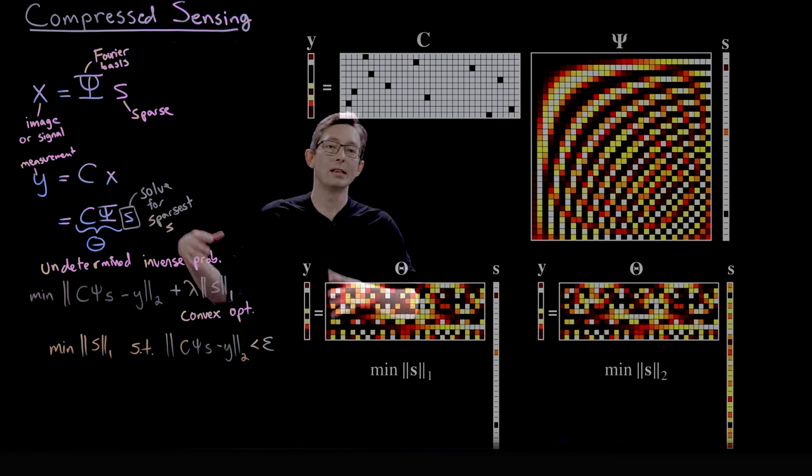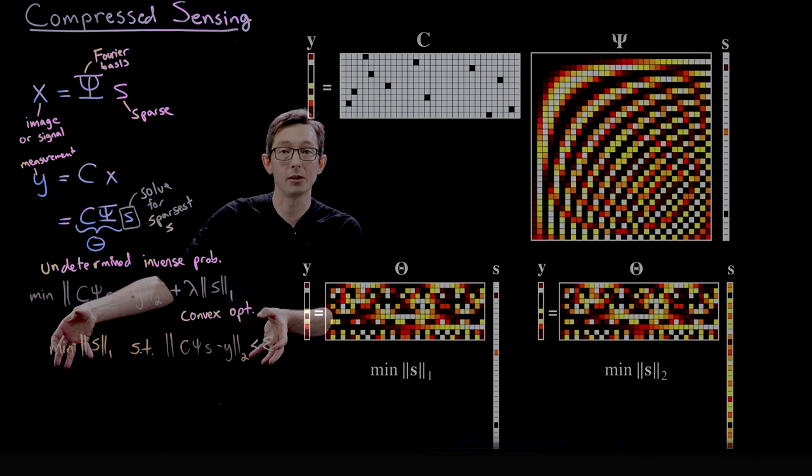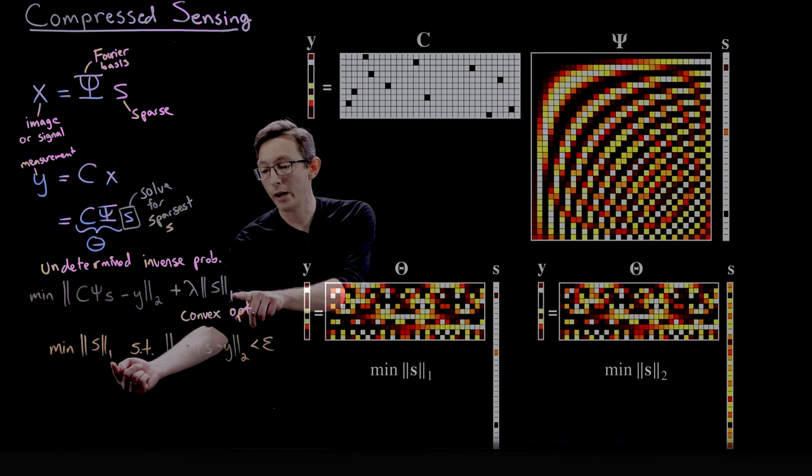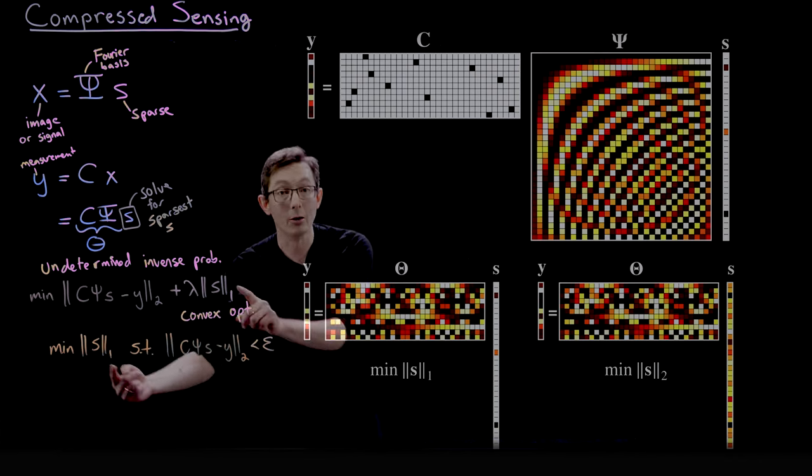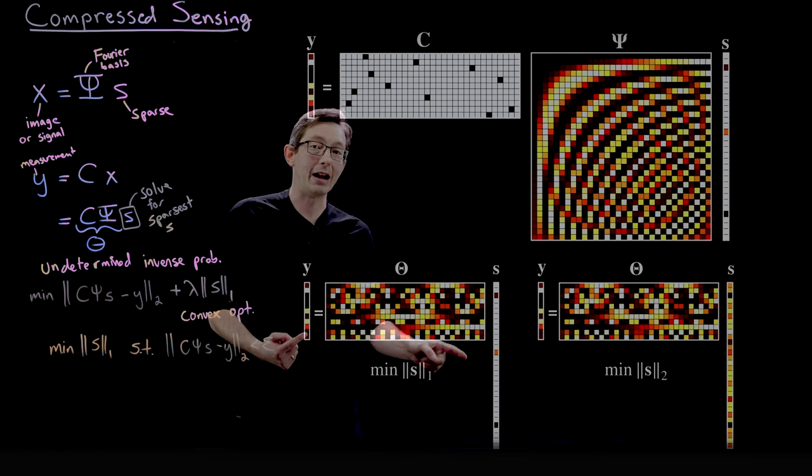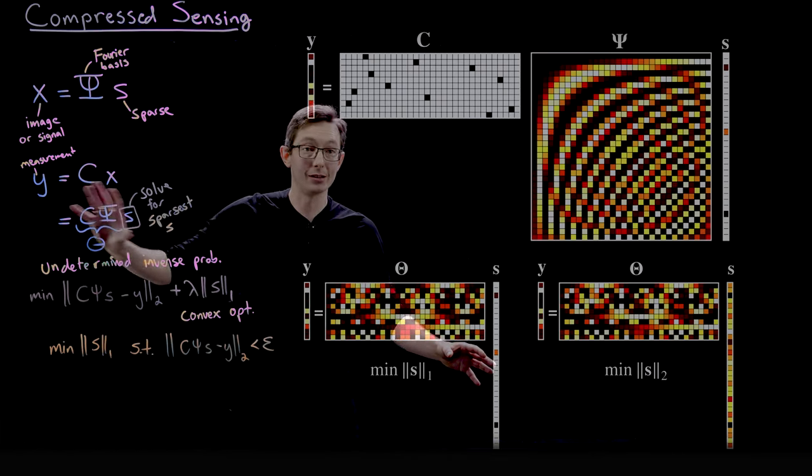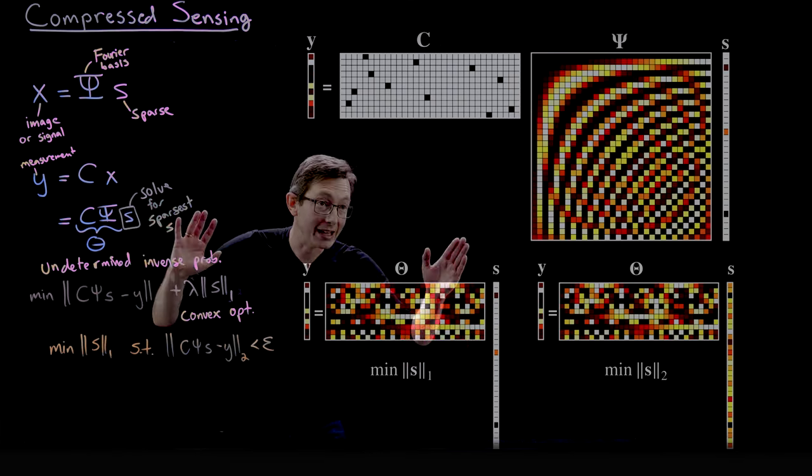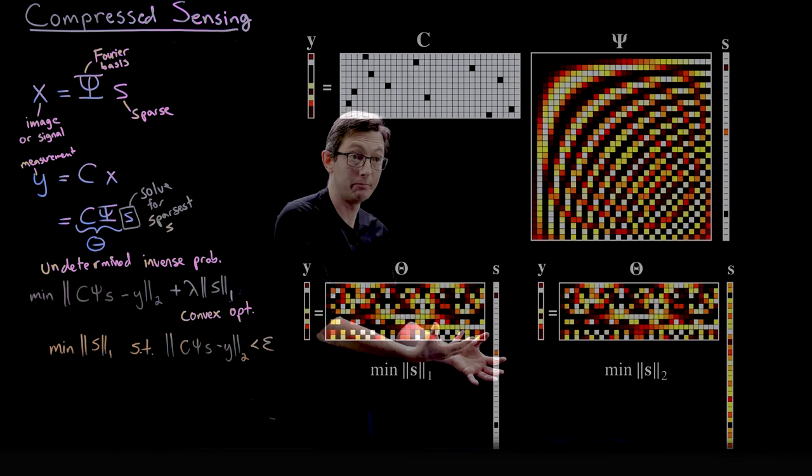And so you can say that this has to be the minimum one norm subject to this error being less than some epsilon or some threshold. So takeaway here is that there are lots of ways of writing this optimization problem. And the L1 norm will promote the sparsest solution out of all of the infinitely many solutions to this underdetermined problem. The L1 norm is going to give us the sparsest solution.